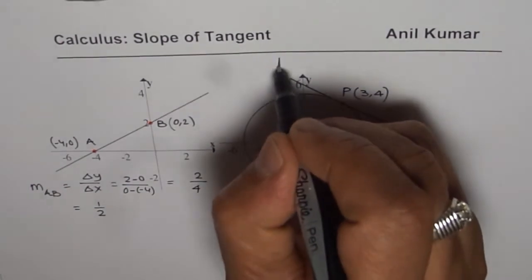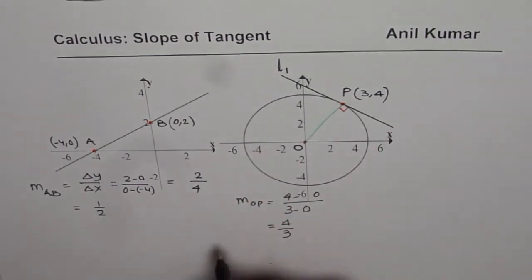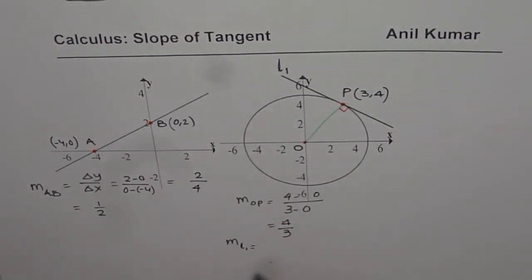Let me call this line L1 as the tangent line. What is the slope of line L1? Slope of line L1 will be negative reciprocal of 4 over 3 or minus 3 over 4. So from this property of perpendicular lines, since these two lines are perpendicular, we could easily find slope of tangent. So that was the strategy applied.